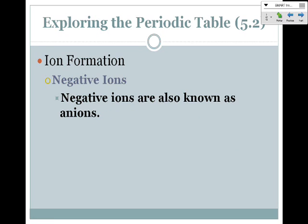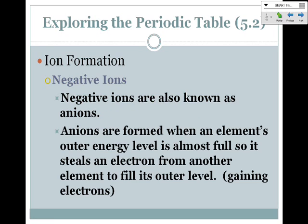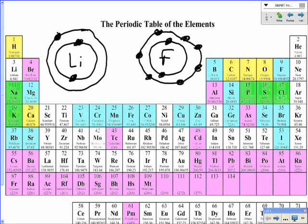Negative ions are also called anions. Anions are formed when an element's outer energy level is almost full, so it steals an electron from another element so that it can fill up its outer level. That means it's gaining electrons, putting more negative charge into the element or atom, so then it becomes negatively charged.